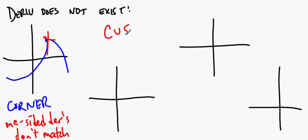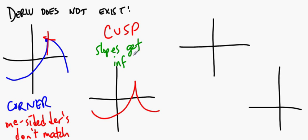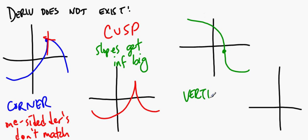The second kind is the cusp. In a cusp, your slopes get infinitely big — you're approaching bigger and bigger and bigger, infinite slope from both sides. That's what creates a cusp. Then your third situation is the vertical tangent, and that pretty much speaks for itself because the slope of a vertical line doesn't exist. And if the slope of a vertical line doesn't exist, then there is no slope, and if there is no slope, there is no derivative.